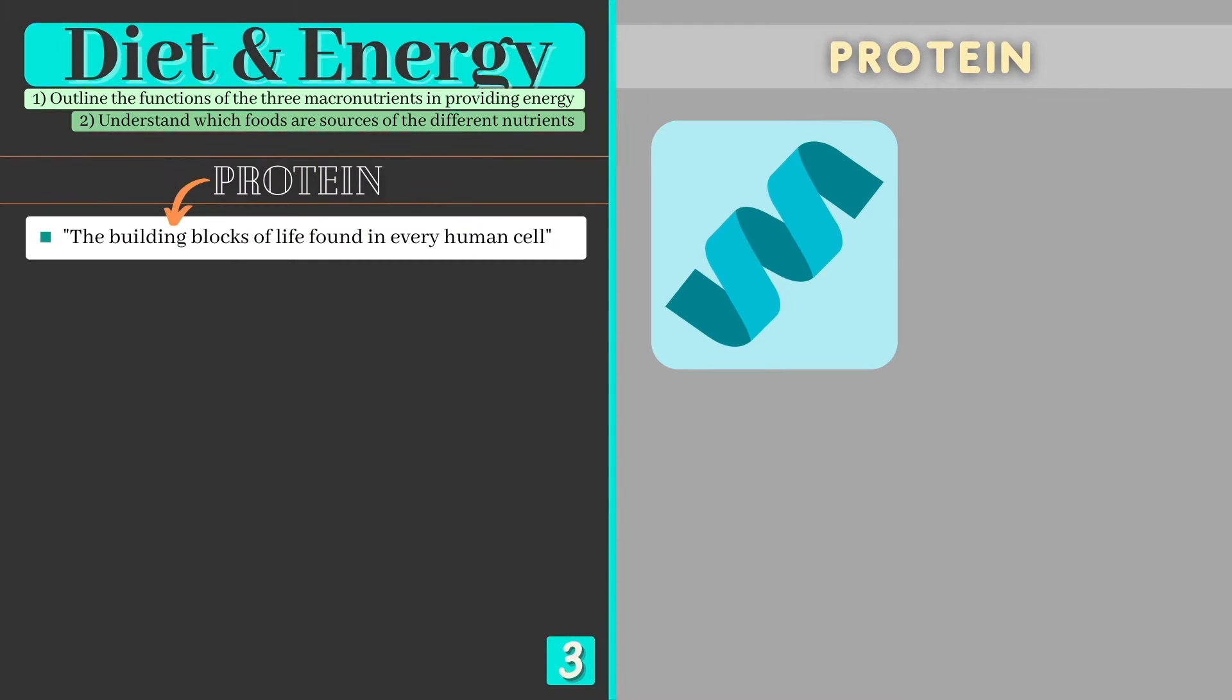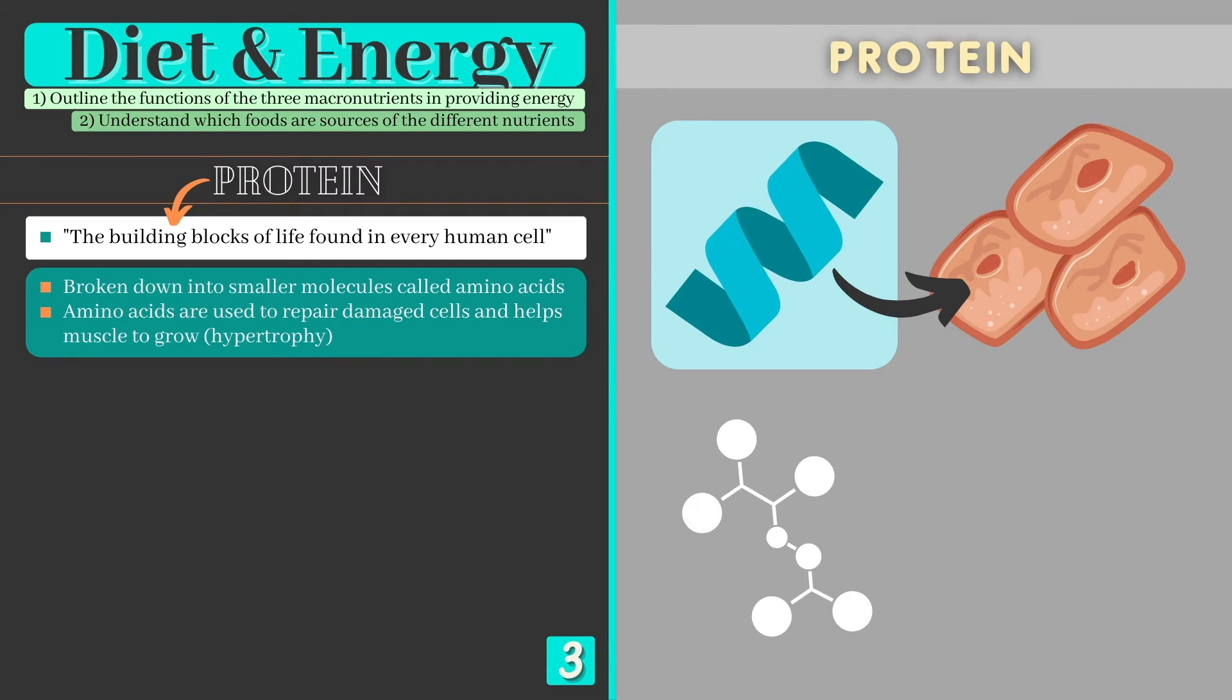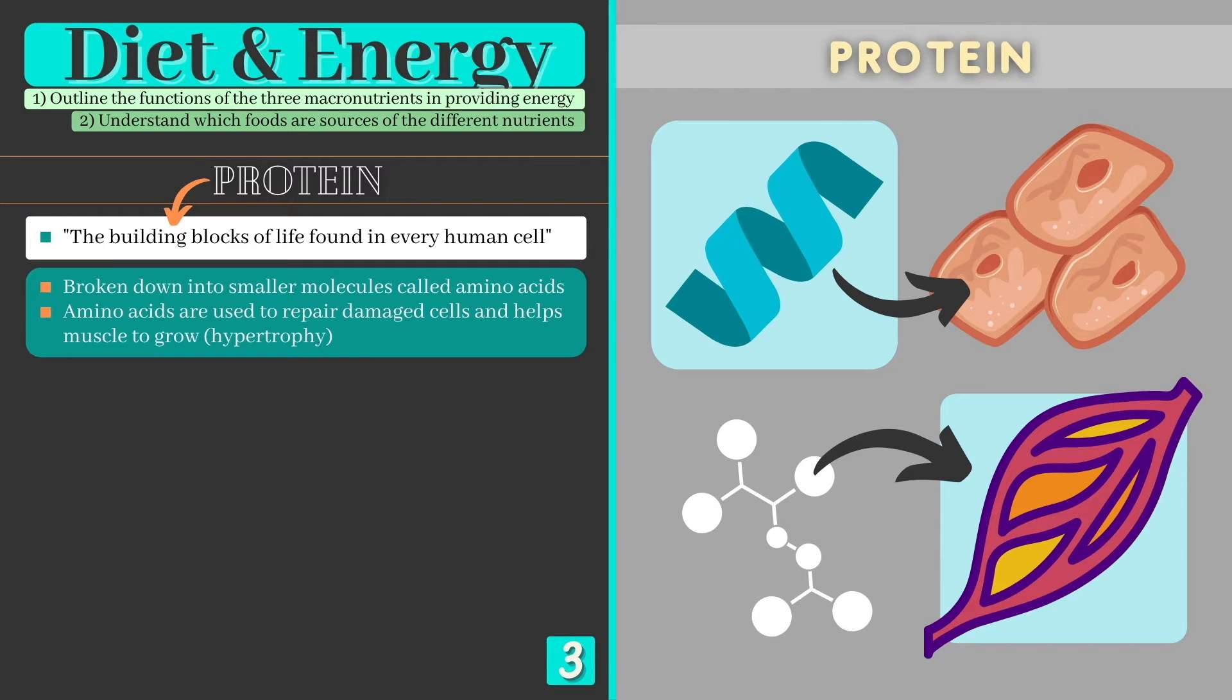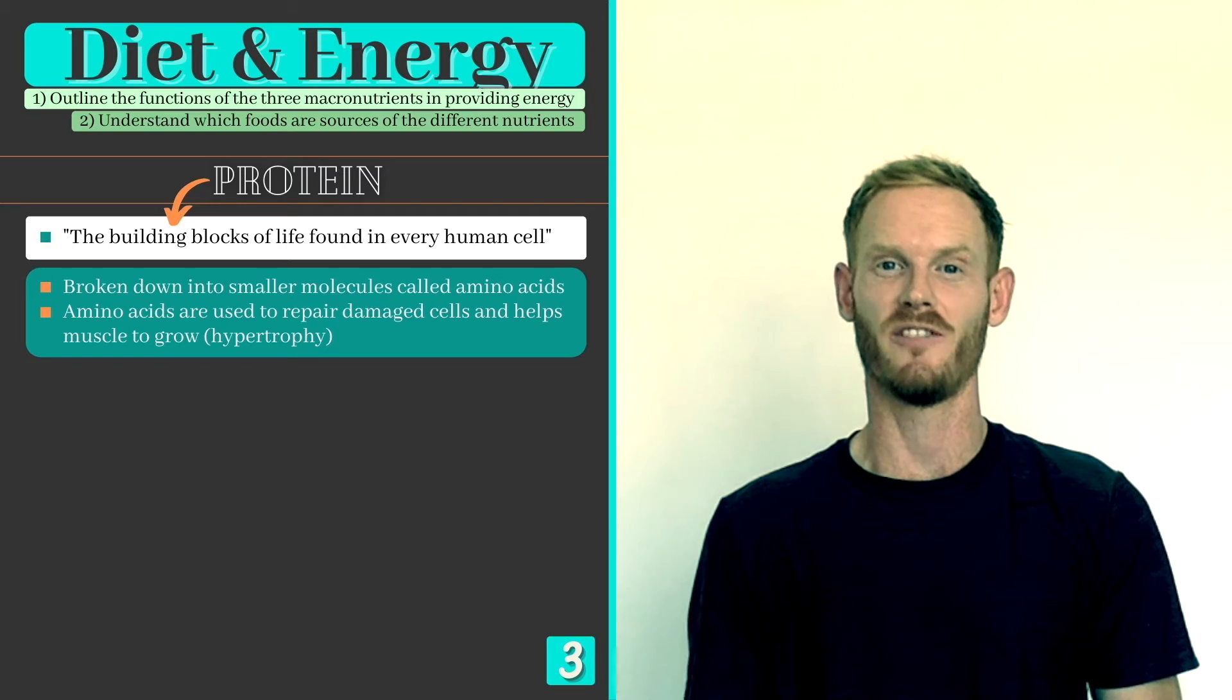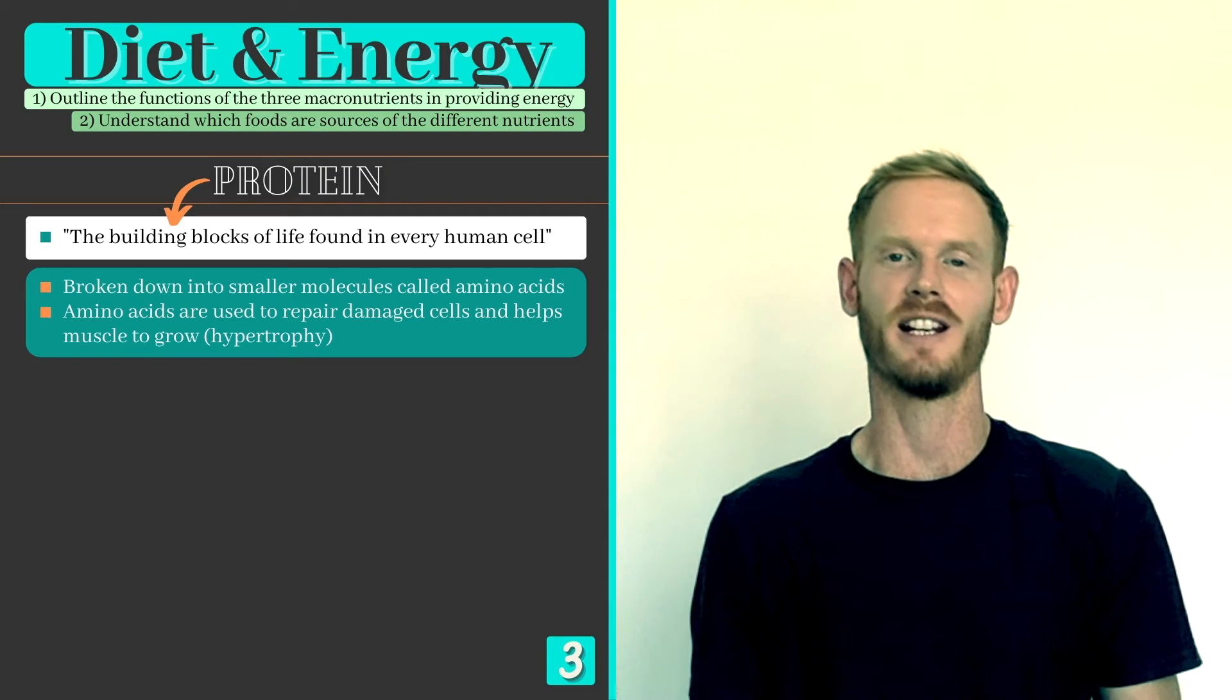Next we have proteins which are the building blocks of life found in every cell within the human body. Proteins typically make up around 15% of our dietary intake and are broken down into smaller molecules called amino acids. These amino acids can be used to repair damaged muscle cells.